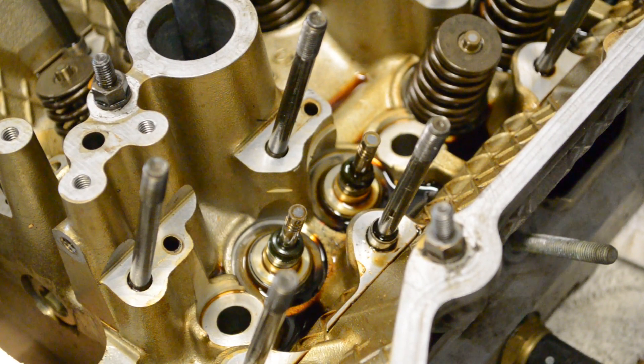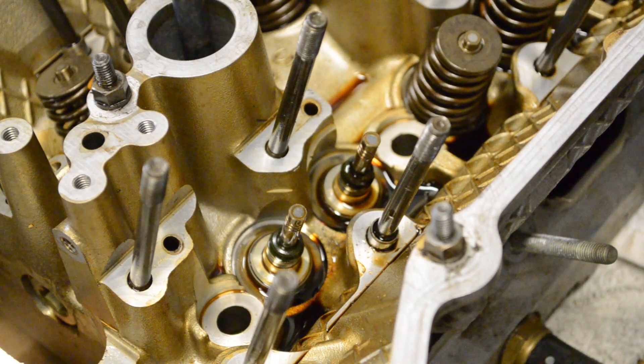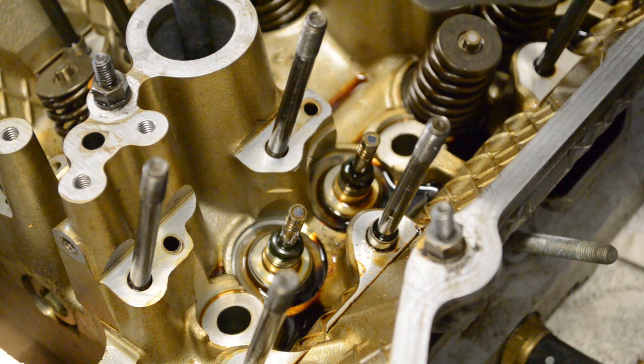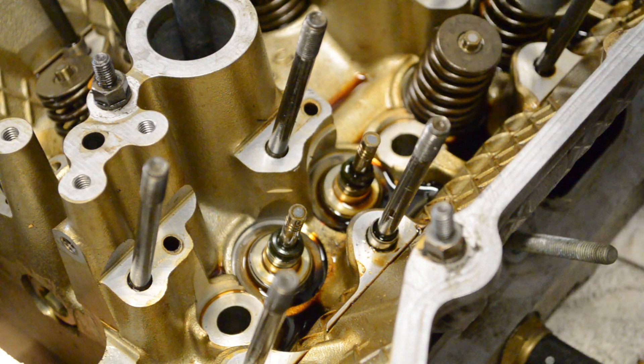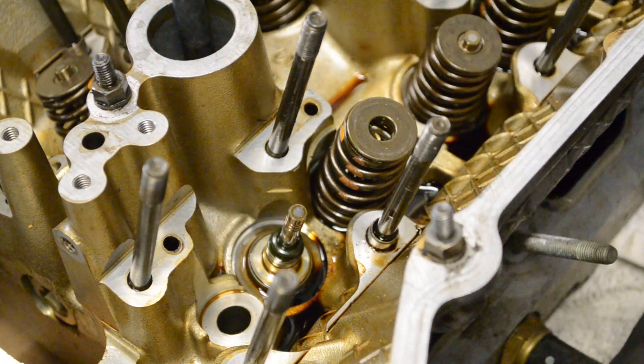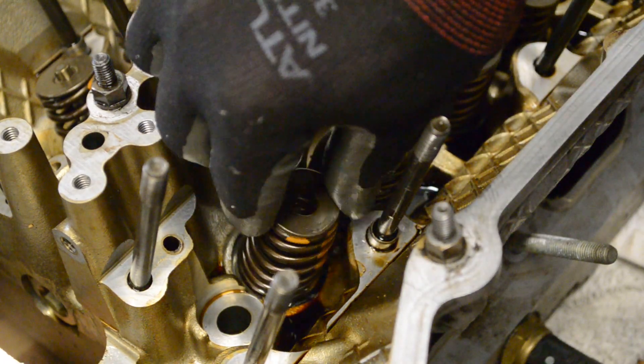Okay. So at this point you could replace, suppose you're upgrading your valve springs, you can do that now. If you've got one of the older 95's that has the crappy keepers, I mean retainers, the non-hardened ones, you could put the new ones in now. There's your valve stem seal if you want to take that out and put a new one in.